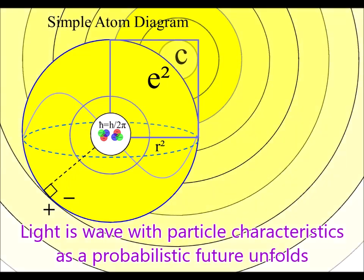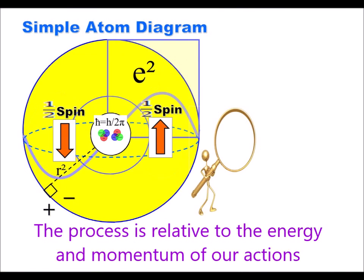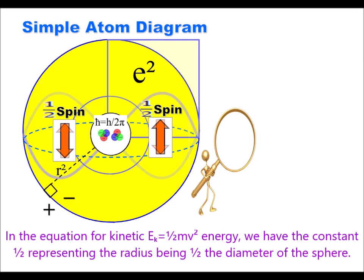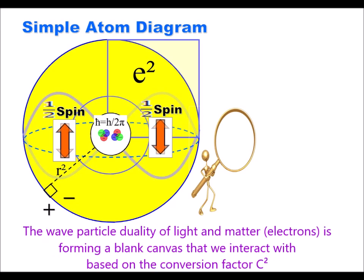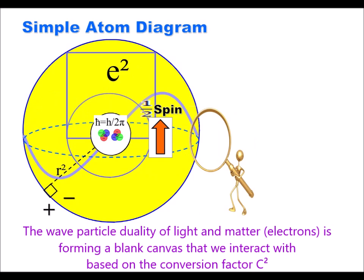There is the potential for a light photon of energy at each point on the spherical surface with a probabilistic uncertain future unfolding with photon potential energy being converted to the kinetic energy of matter.